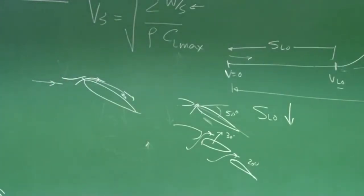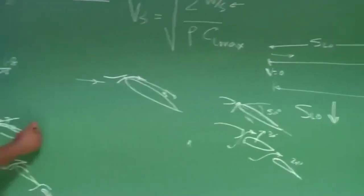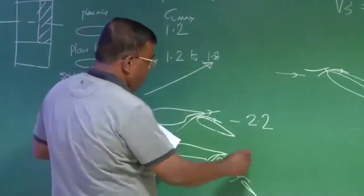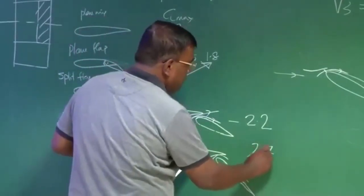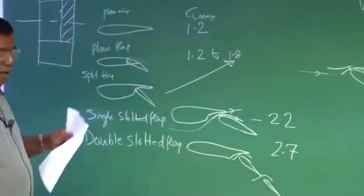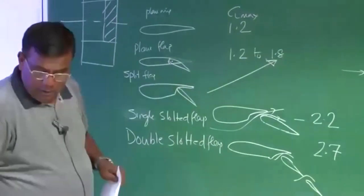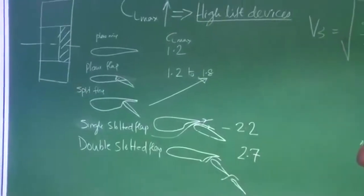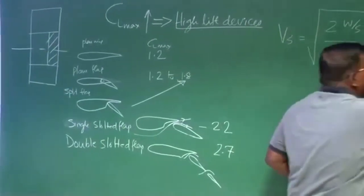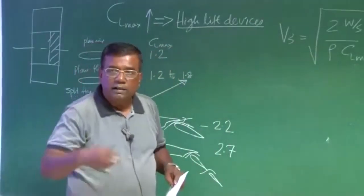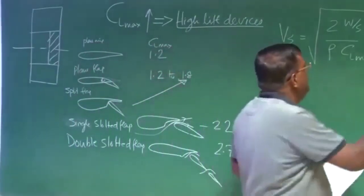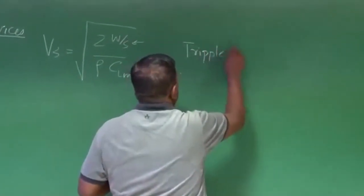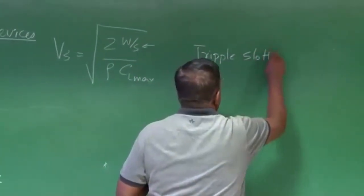And if you see the typical numbers, for a single slotted it will be around 2.2. These are just typical order of magnitude. You have to see charts to get the exact value or if you go for tunnel testing. The story does not end here. Once this concept is understood, that if I put a slot I can delay the separation. So I can increase the deflections. So there came triple slotted flaps.